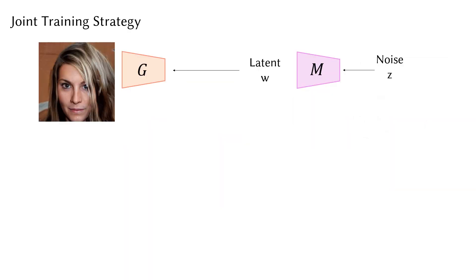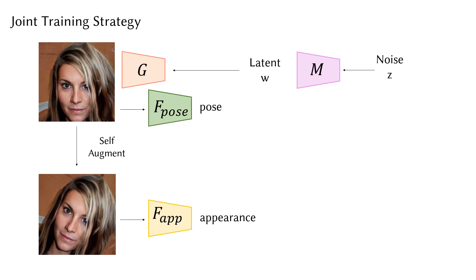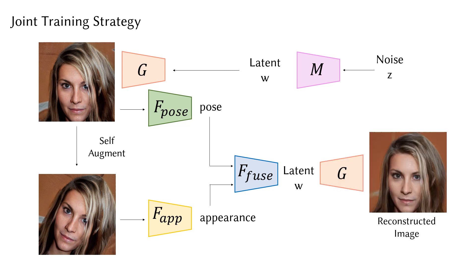Besides video training data, the Joint Training Strategy also samples generated images for training. If we extract pose and appearance from the same image, the networks do not necessarily learn the decomposition. Self-augmentation is used to randomly transform the generated image through the embedded function of StyleGAN3. We use the original version to provide the pose information and the transformed variants to provide the appearance information, then recompose both representations and get the reconstructed image through the synthesis network.